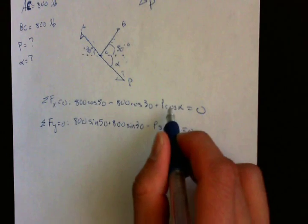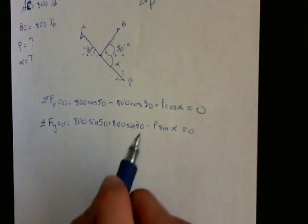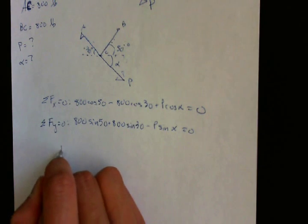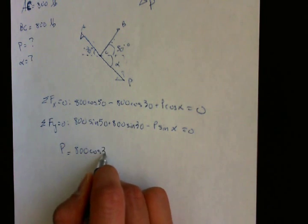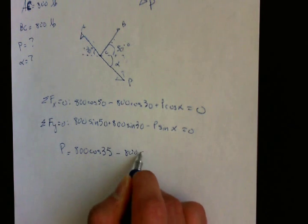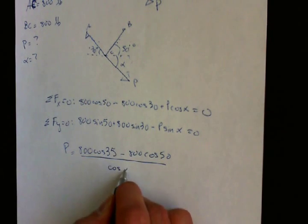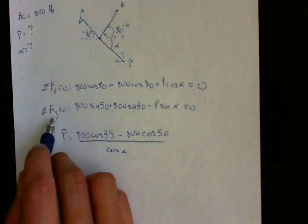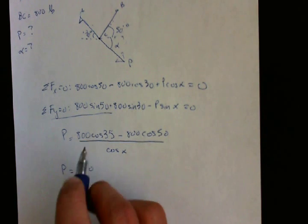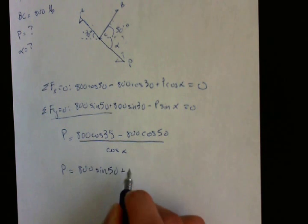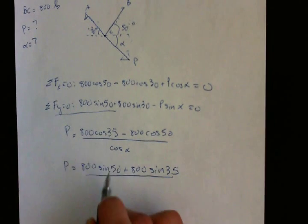Now next solve both of these equations for P. So for the top one, if you solve for P, it'll be P equals 800 cosine 35 minus 800 cosine 50 divided by cosine alpha. And then if you solve this equation for P, you will get P equals 800 sine 50 plus 800 sine 35 divided by sine alpha.